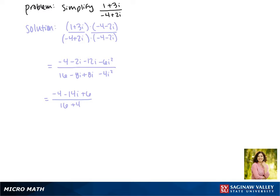Now let's combine our like terms again. Negative 4 plus 6 is 2, and then minus 14i in the numerator. In the denominator we get 20.